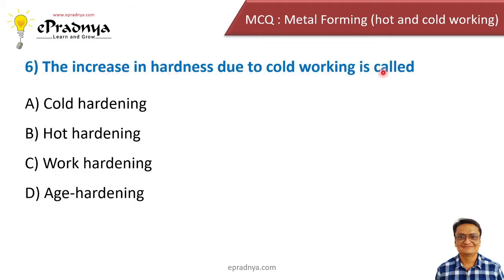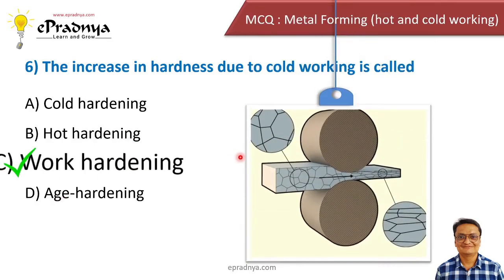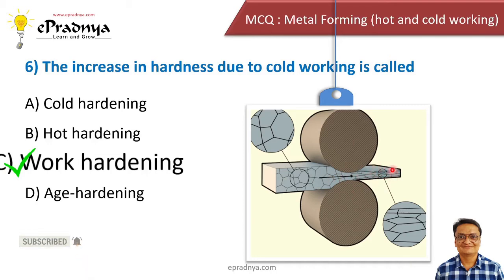Sixth MCQ: The increase in hardness due to the cold working process is called — cold hardening or work hardening? The correct answer is work hardening. In the rolling process, the input material is pressed between two rolls and we get a reduced thickness. The grain structure gets deformed as the material passes through the rolls, which increases the hardness of the material — this is work hardening. It also increases the strength of the material but reduces its ductility.